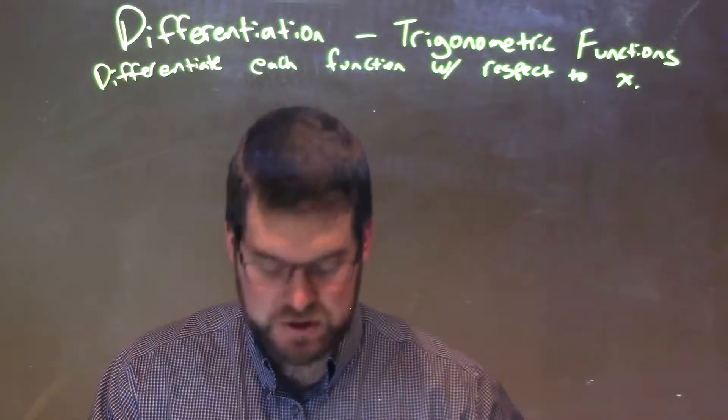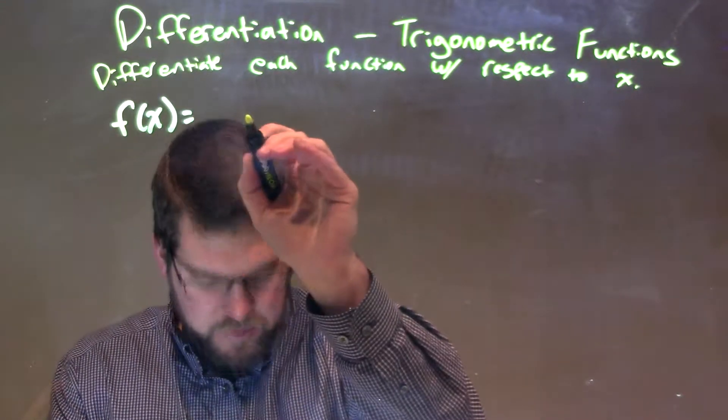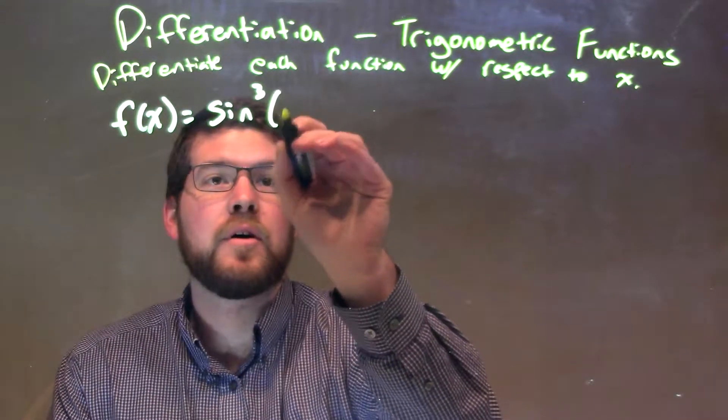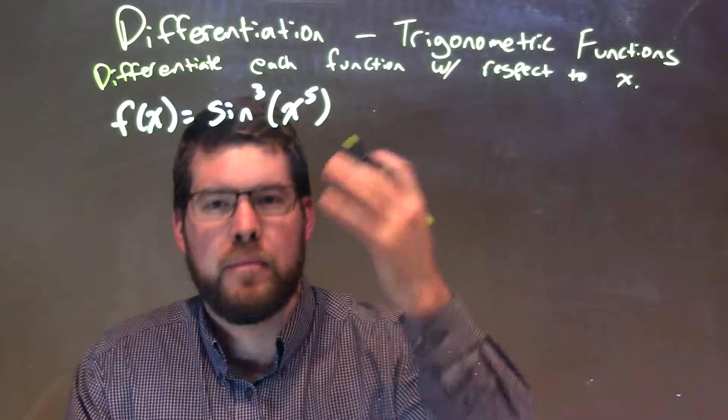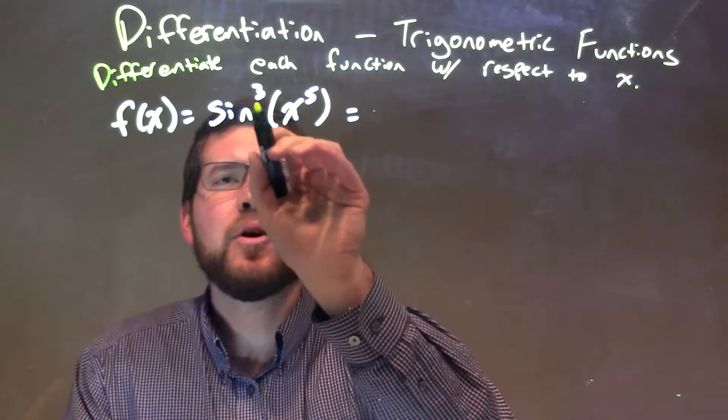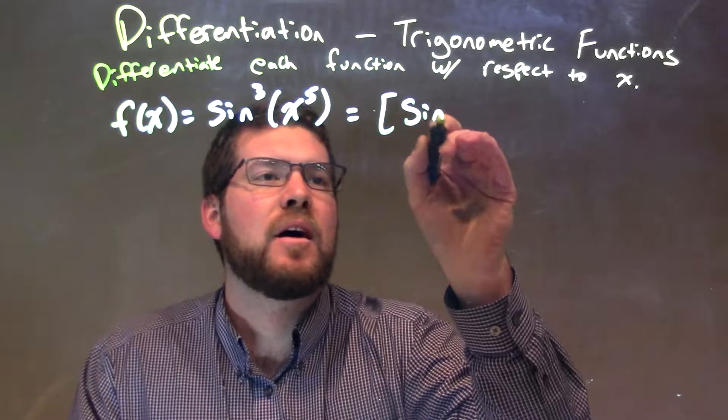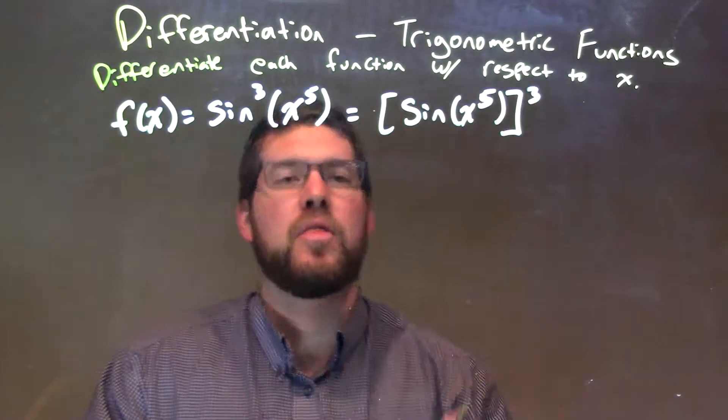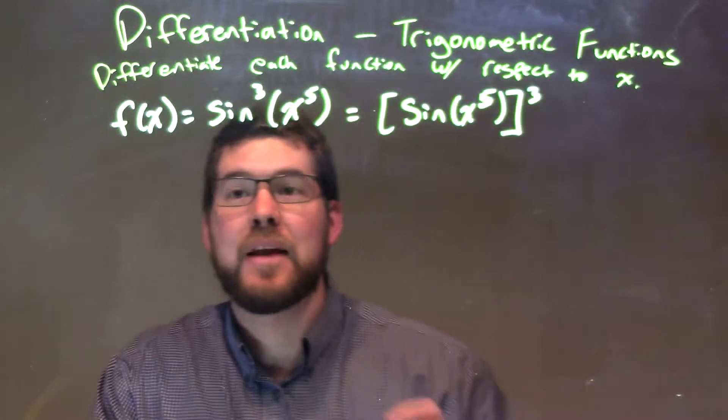If I was given this function, f(x) is equal to sine to the third power of x to the fifth power. Now, one thing to note here, and it's always good to see this, that third power right there is really saying this: we have sine of x to the fifth, all of that is going to the third power of the whole thing, and this does help us find that derivative.